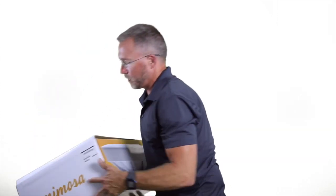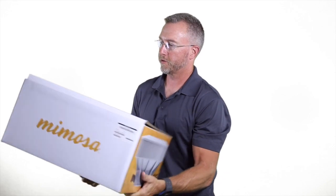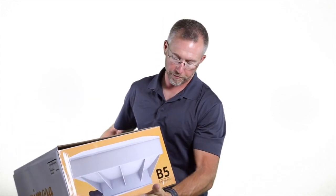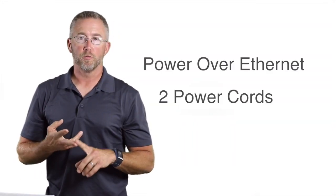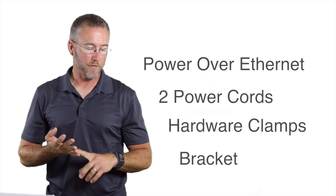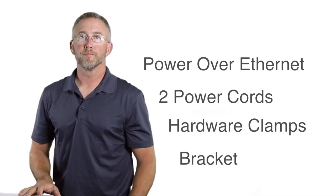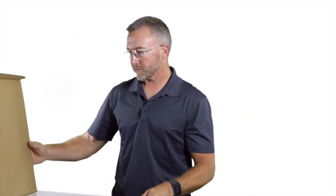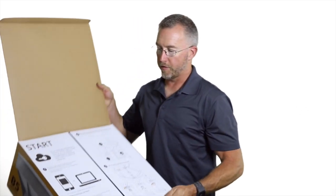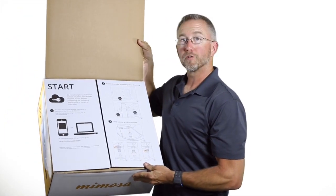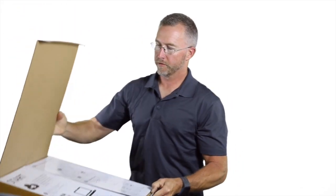The box that the B5 comes in for shipping is actually not much bigger than the unit itself. Everything required for the installation is in the box. Your power over Ethernet, the two power cords, the hardware, and the bracket are all included. And there's basic instructions on the inside flap on how to get started.